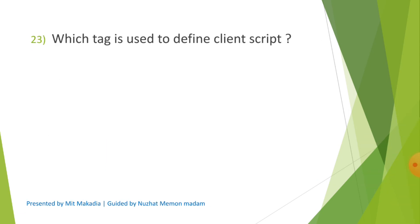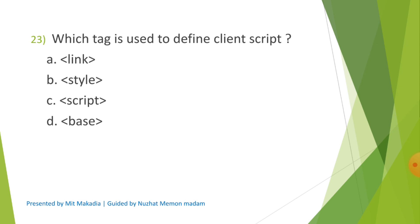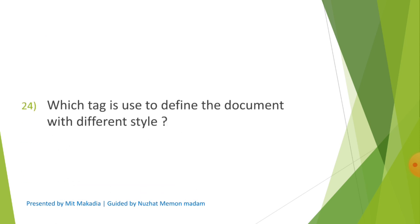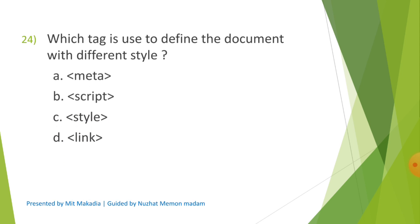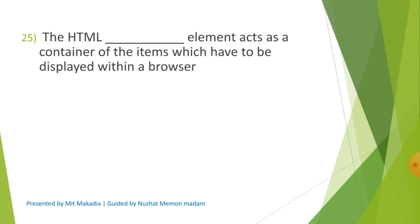Question 23: Which tag is used to define client script? Options are A) Link, B) Style, C) Script, D) Base. The correct answer is C) Script. Question 24: Which tag is used to define a document with different style? Options are A) Meta, B) Script, C) Style, D) Link. The correct answer is C) Style. Question 25: In HTML, dash elements act as a container of items which have to be displayed within a browser. Options are A) Title, B) Head, C) Body, D) HTML. The correct answer is C) Body.